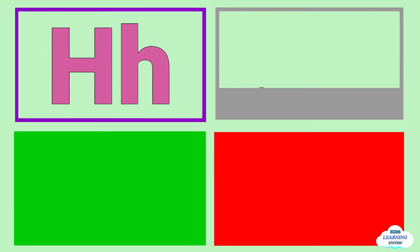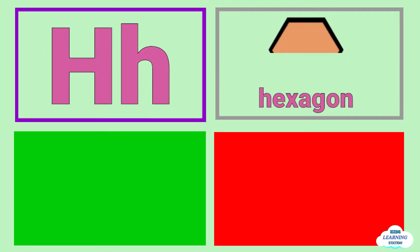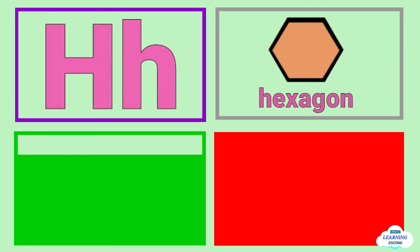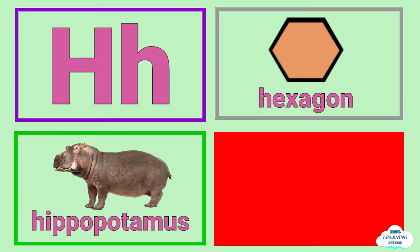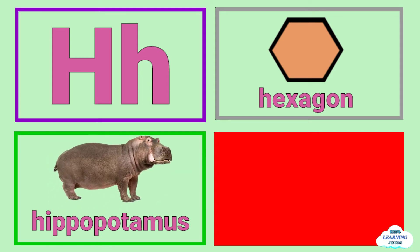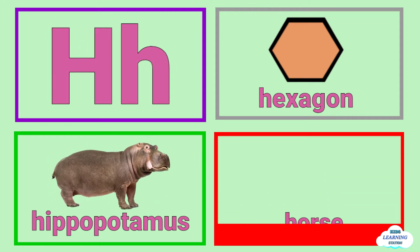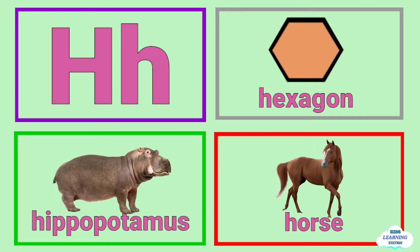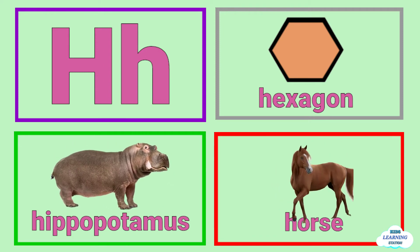H is for hexagon, hexagon. H is for hippopotamus, hippopotamus. H is for horse, horse.